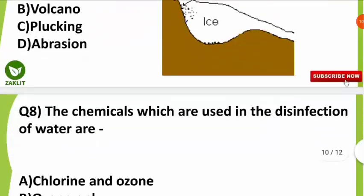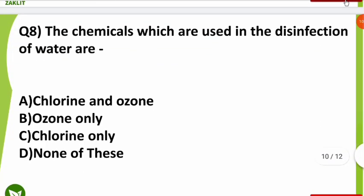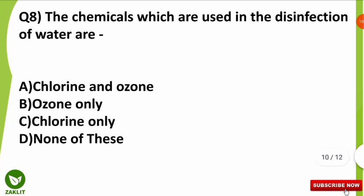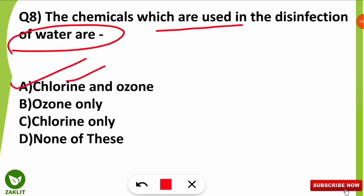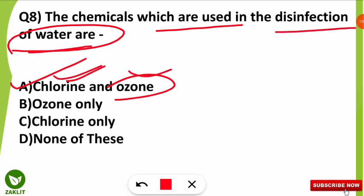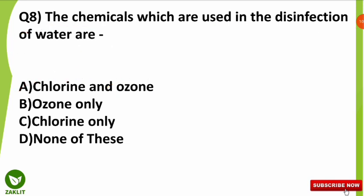The eighth question was very simple: the chemicals used in the disinfection of water are what? The correct answer is option A — chlorine and ozone. These two are the chemicals used for the disinfection of water, and are mostly used for the disinfection of drinking water.